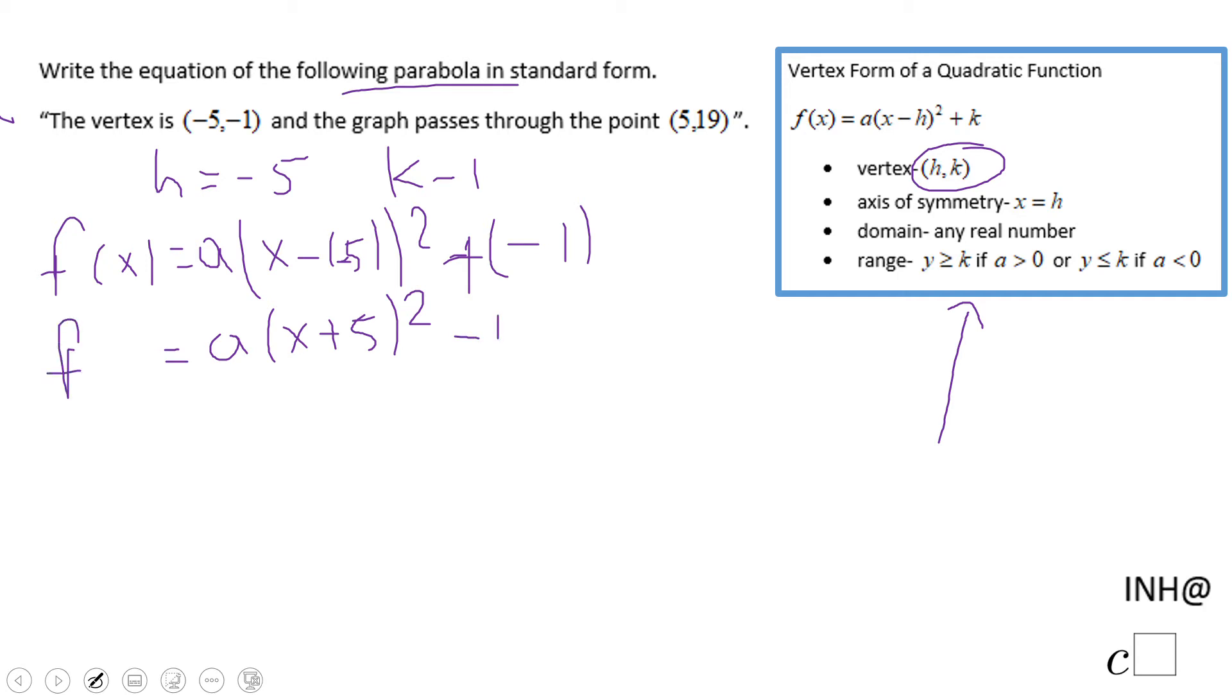You notice we have one small issue: we need to find a. To find a, we're going to use the given point (5, 19), which means when x is 5, y is 19, or the value of the function is 19.